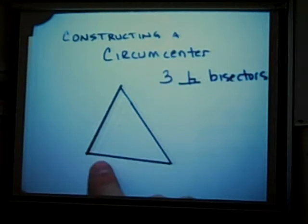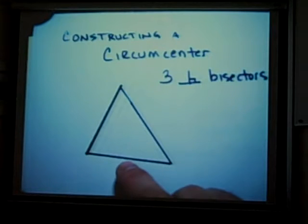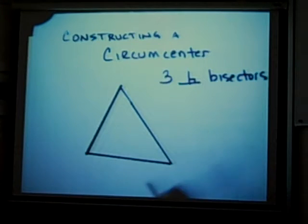So perpendicular bisectors, that means it's going to be going through each side in exactly the middle and going straight up. It will not necessarily go through the vertex.